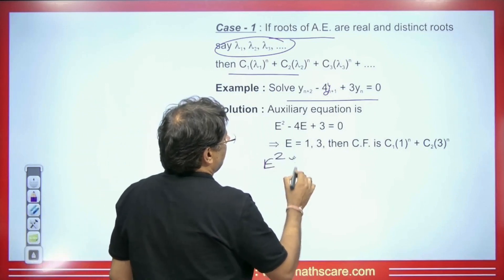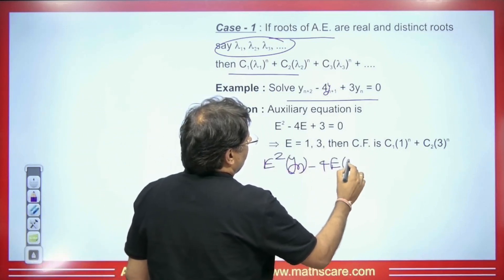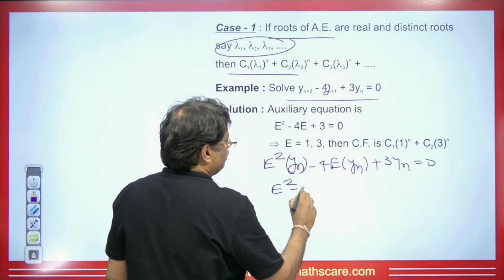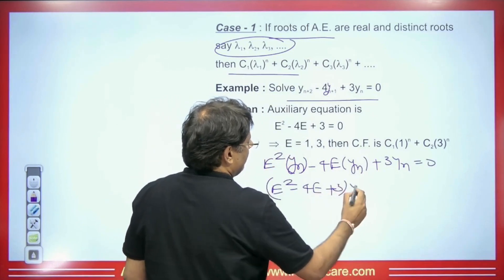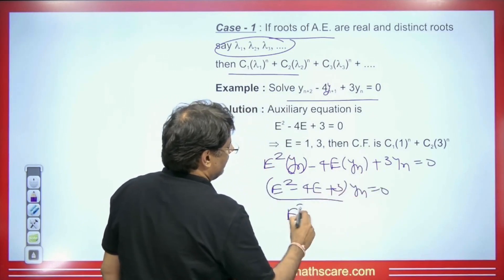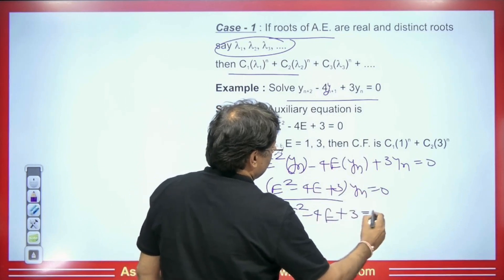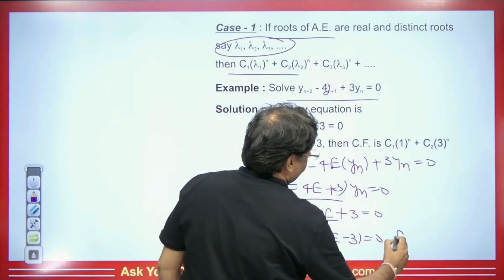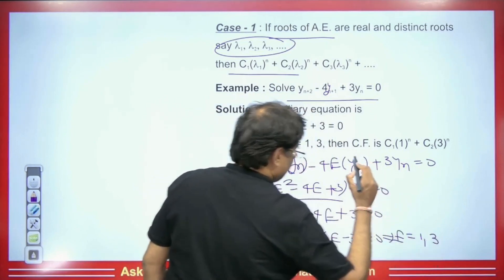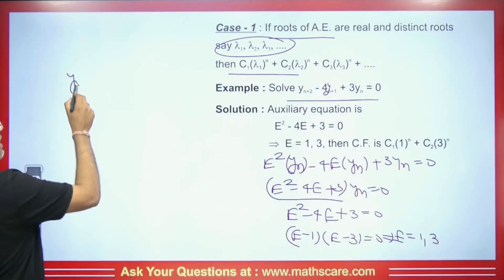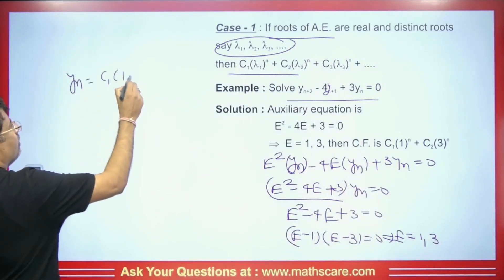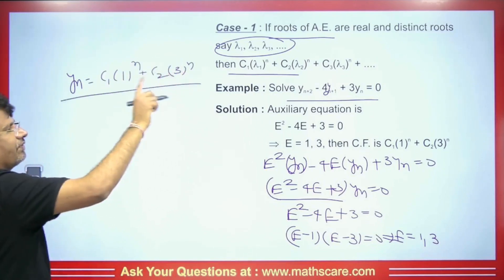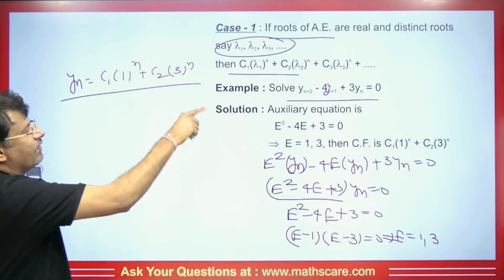Let's see how we write it. It will be E²·yn - 4E·yn + 3yn = 0. Taking yn common from the back, we get (E² - 4E + 3)·yn = 0. Now put E² - 4E + 3 = 0. When we solve this, we get (E - 1)(E - 3) = 0. So the two values of E are 1 and 3. Thus, the answer we get will be yn = C1·(1)^n + C2·(3)^n. This will be the solution for the difference equation.